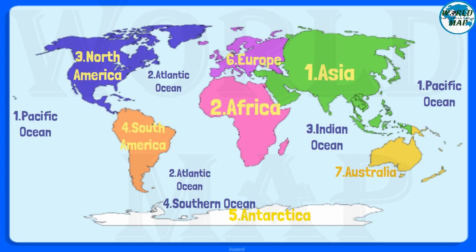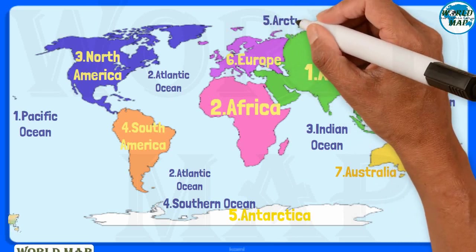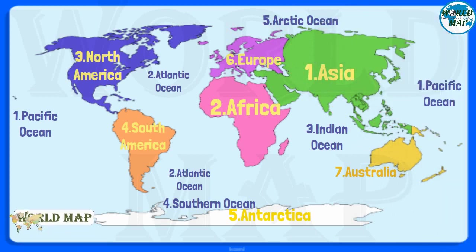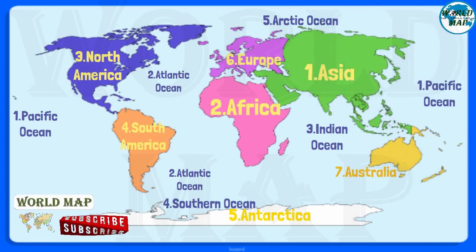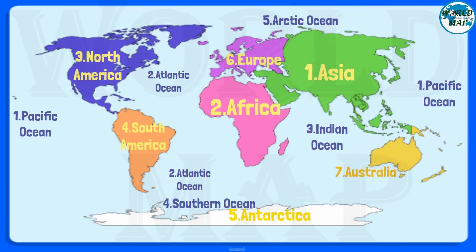Number 5. Arctic Ocean. The Arctic Ocean is the world's smallest and shallowest ocean of all five oceans. Further to this, it is the coldest and least salty ocean.